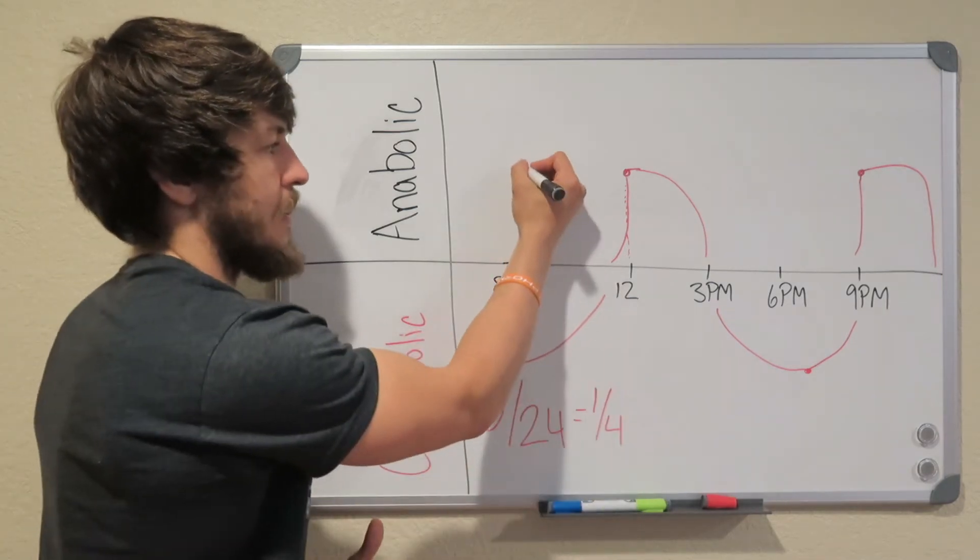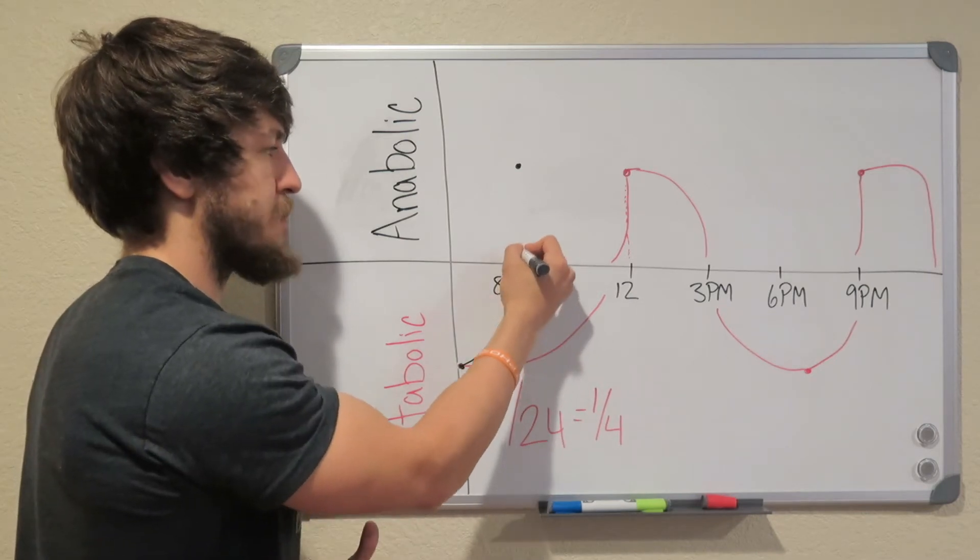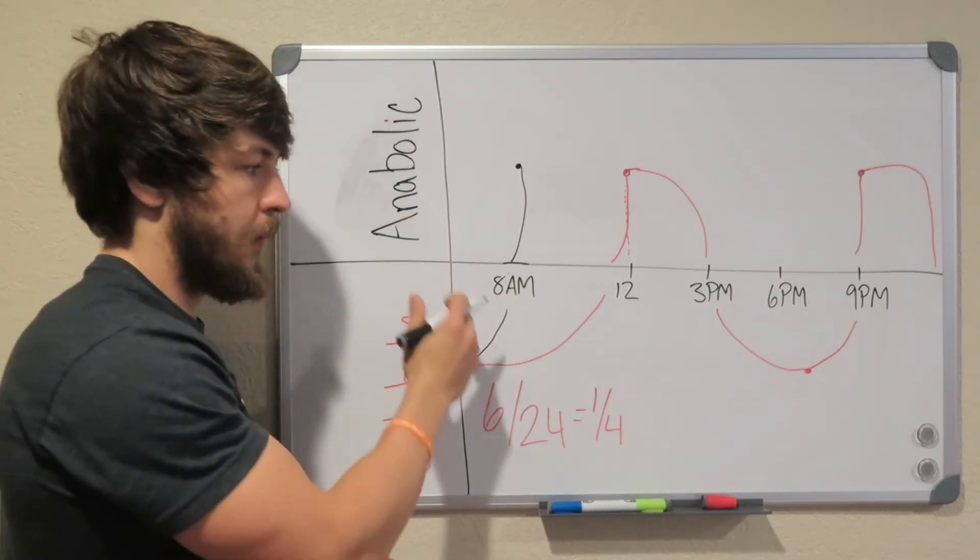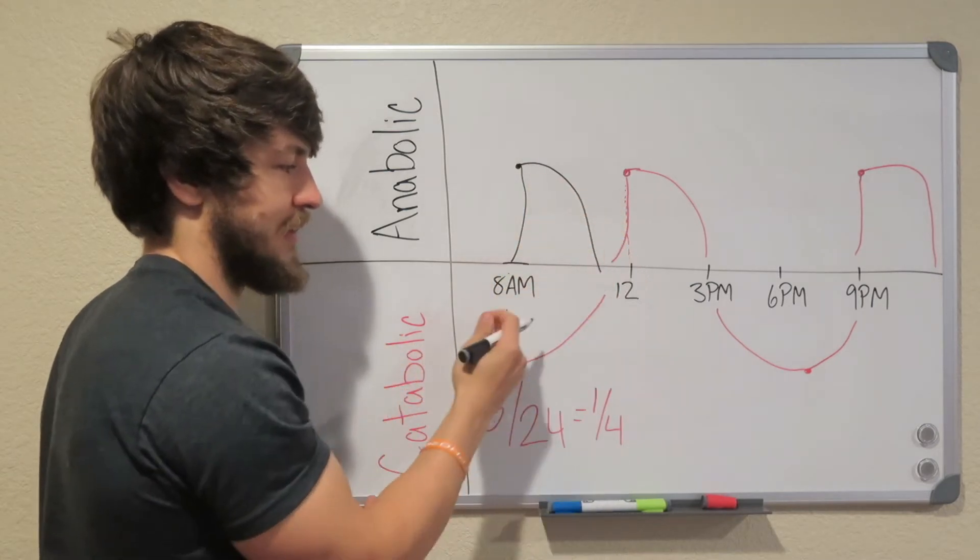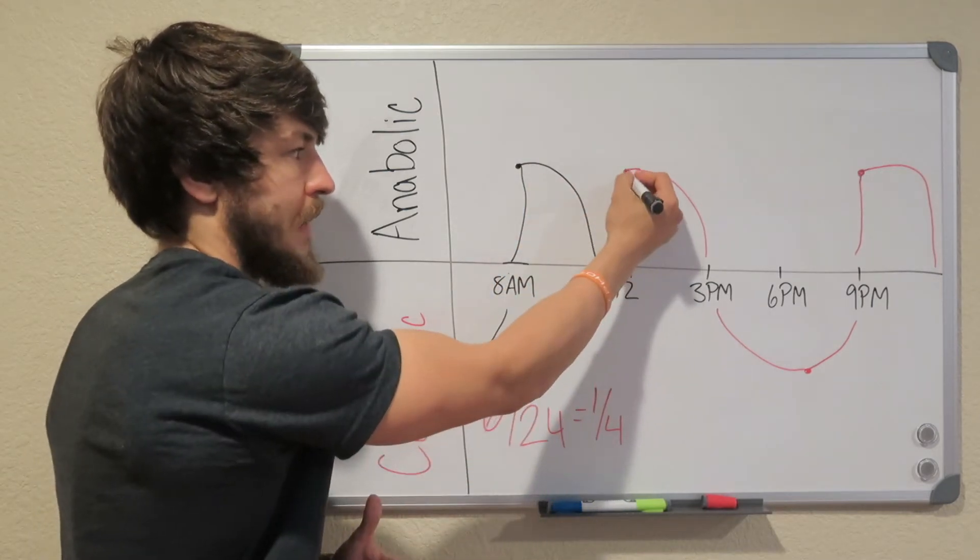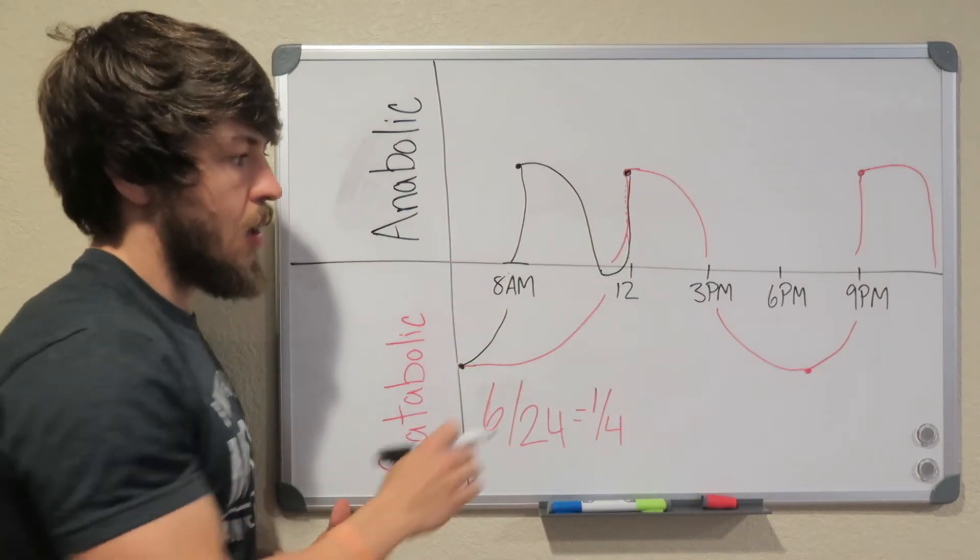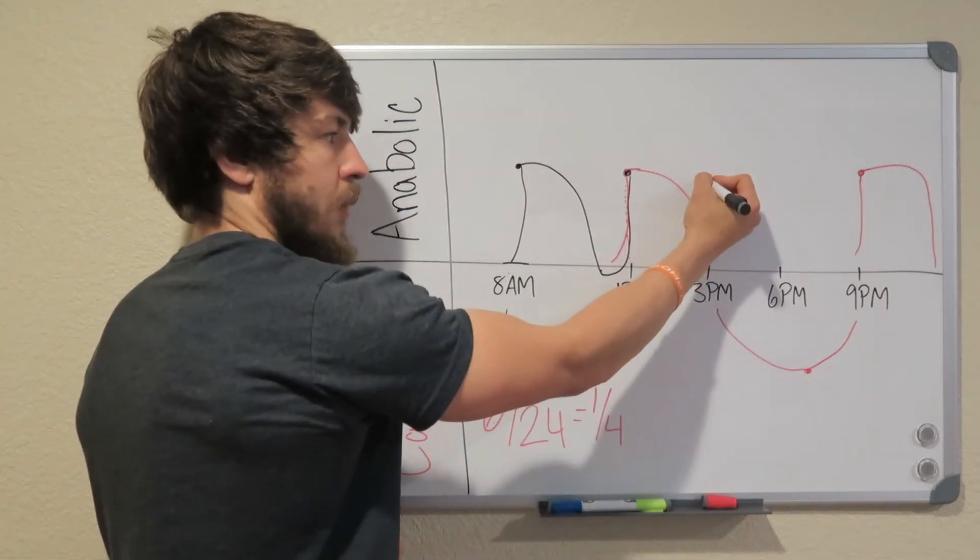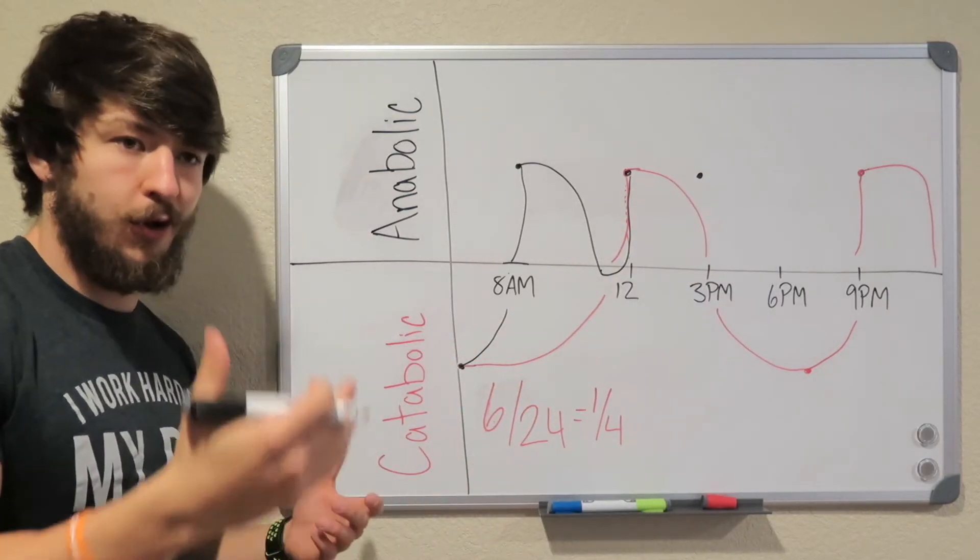The difference with this person is they're going to eat a meal right when they wake up for breakfast, which is immediately going to bump them up. Then we go throughout our day. We'll get really close to going back under, because this is four hours. But we're going to eat another meal here, so it's going to bump us right back up.